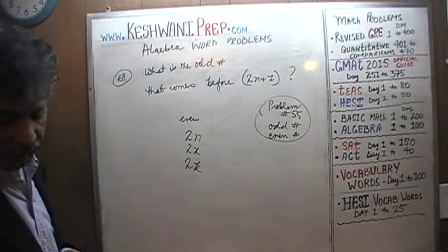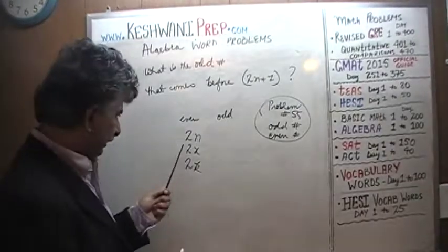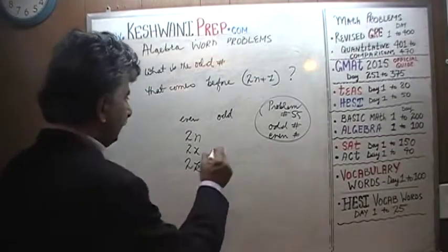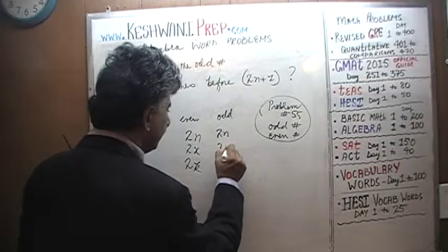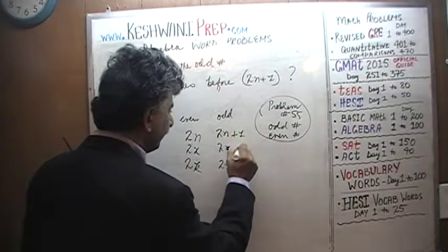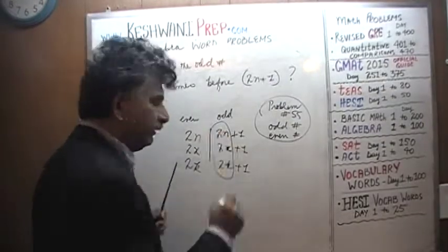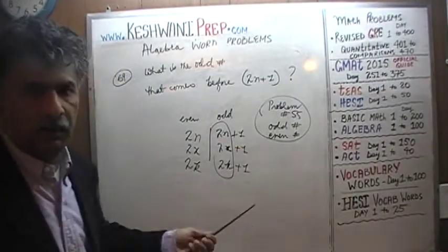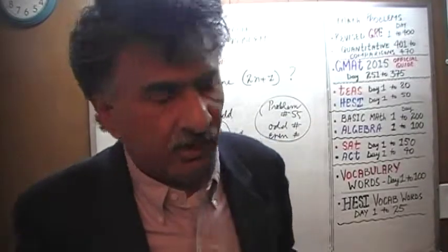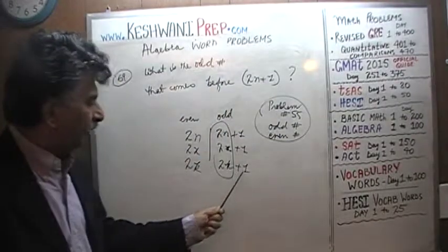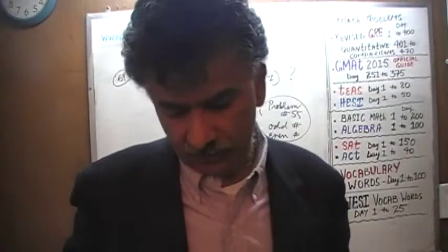How do we represent odd numbers? We know that 2n, 2x, and 2k are always going to be even quantities. So we take these quantities and simply add one to them. Because these are even quantities, adding one forces them to be odd numbers. An even quantity plus 1 will always, always, always be an odd quantity.